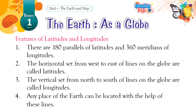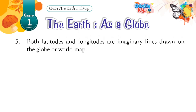Features of Latitudes and Longitudes: There are 180 parallels of latitudes and 360 meridians of longitudes. The horizontal set of lines running from west to east on the globe are called latitudes. The vertical set of lines running from north to south are called longitudes. Any place on the Earth can be located with the help of these lines. Both latitudes and longitudes are imaginary lines drawn on the globe or world map.